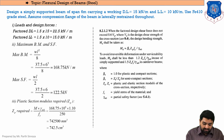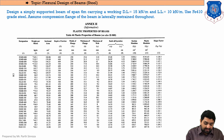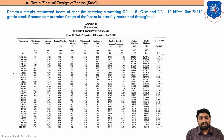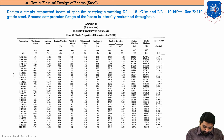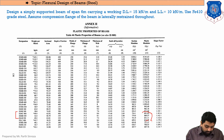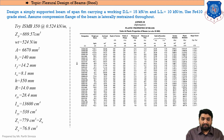Moving to page 138 of the IS code, which gives plastic properties, we look for ISHB or ISMB sections only — no other section types. Since ZP required = 742.5 cm³, we select the next higher value. The section chosen is ISMB 350 at 0.524 kN/m self-weight, which provides a ZP greater than 742.5 cm³.